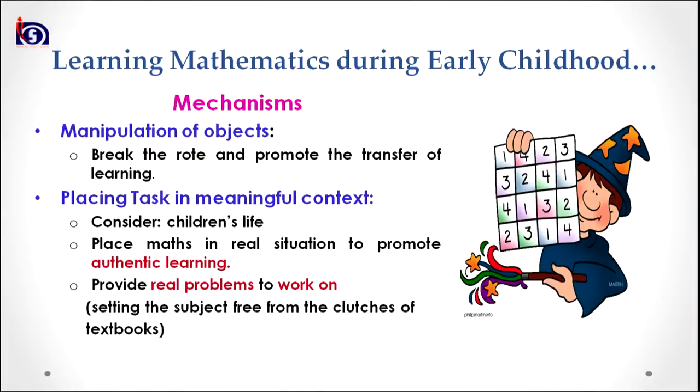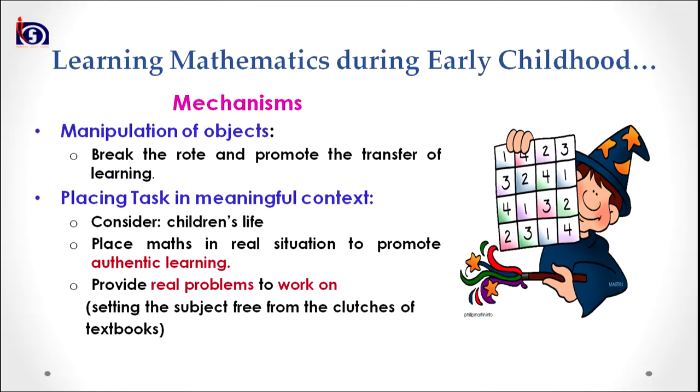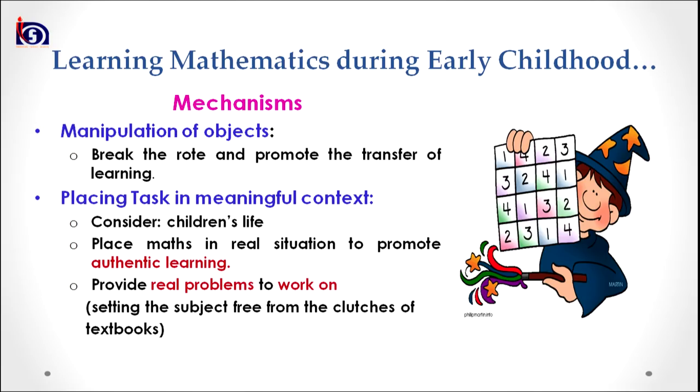The second mechanism is placing the task in meaningful context, that is, contextualizing mathematics. We need to understand that relating mathematics to children's lives is very, very important. Otherwise, they won't be able to relate to the learning and mathematics will remain an area of fear and phobia for them. Therefore, it is very important to place mathematics in children's life and make it meaningful. Placing mathematics in real-life situations also promotes authentic learning and provides real problems to work on, setting the subject free from the clutches of the textbook and making it more practical and action-oriented.